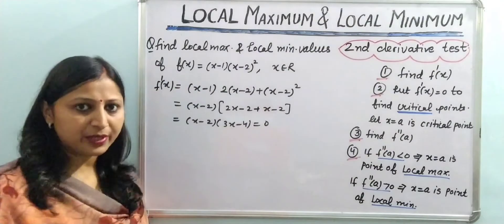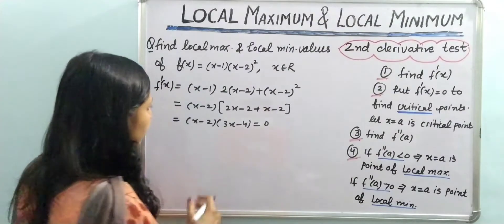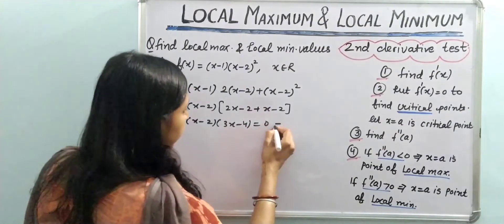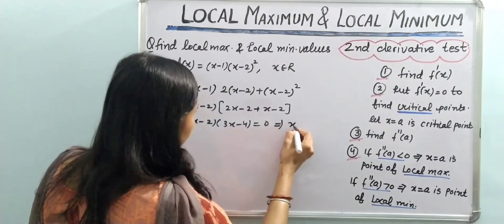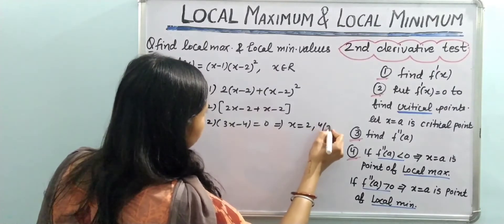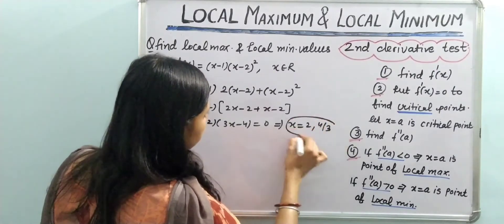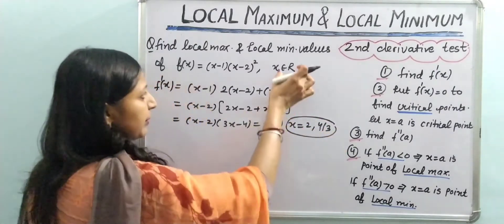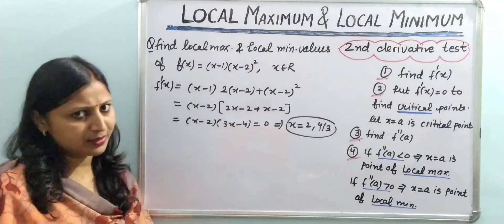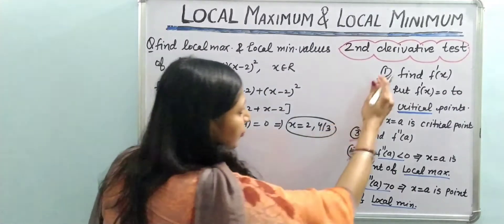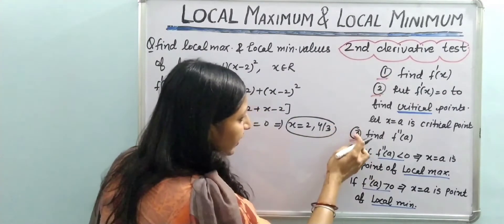Setting f'(x) equal to zero gives us two critical points: x = 2 and x = 4/3. Since x belongs to the set of all real numbers and it is a polynomial function, both are valid critical points. So the first two steps are done.